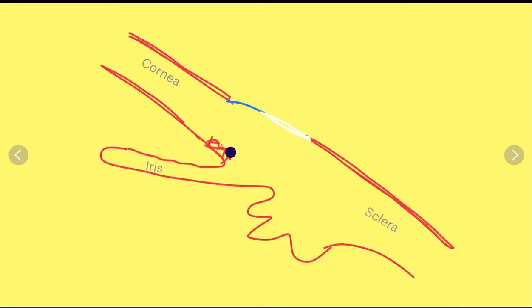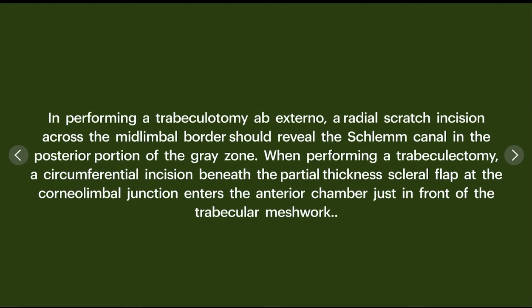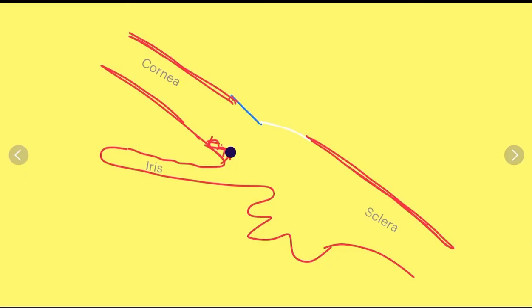The third important application is in glaucoma filtration surgeries. In trabeculotomy ab externo — that is, trabeculotomy performed from the external approach — a radial scratch incision is placed along the mid limbal border to reveal Schlemm's canal. When we place this radial incision at the mid limbal border and dissect deeper, we find Schlemm's canal in the posterior part of the blue zone.